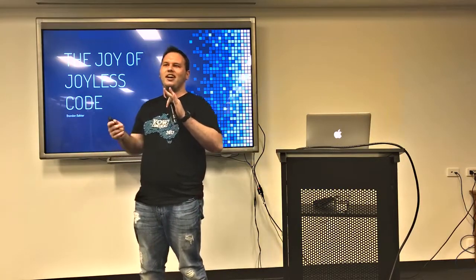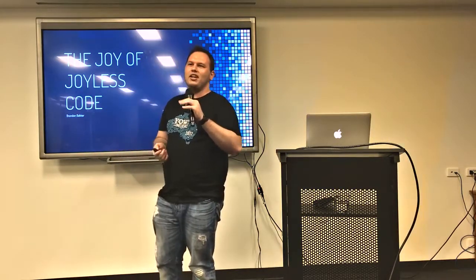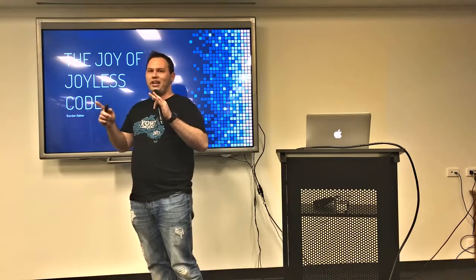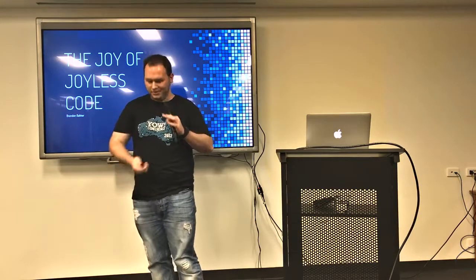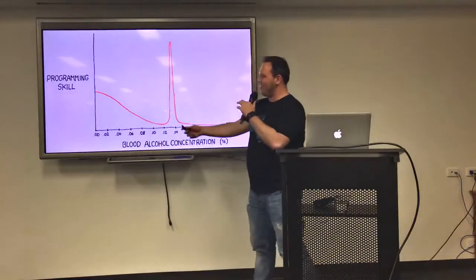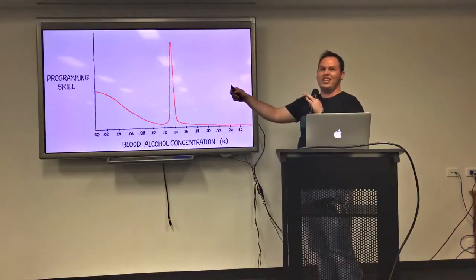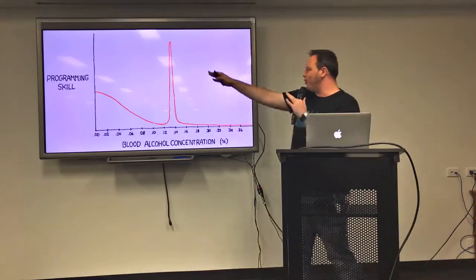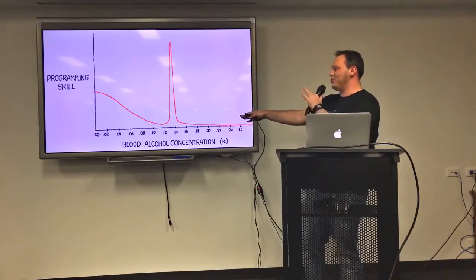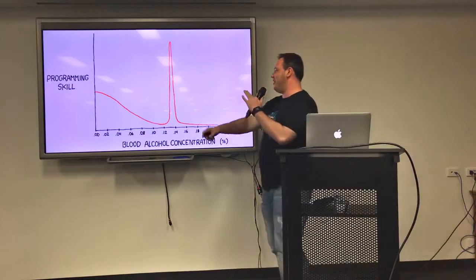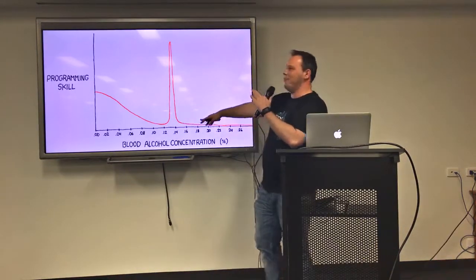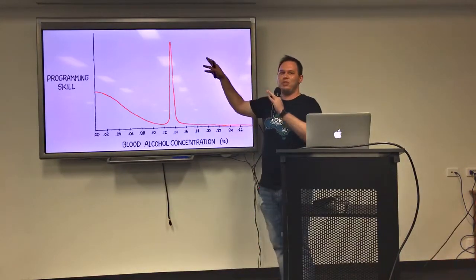I feel more like I should be pointing at graphs and talking about the contents within. So before we start, I just want you all to bear with me — I need to get this out of my system. I just need to talk about a graph. So as you can see here, we have programming skill over blood alcohol concentration and you can see roughly between the 12th and the 14th, we're seeing a massive spike.